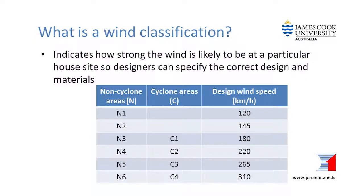What is a wind classification? A wind classification is a letter and number combination that indicates the wind speed expected at a house site. It depends on many factors that can vary from house to house, so the wind classification must be evaluated specifically for each house.